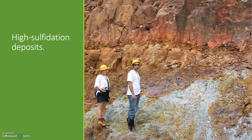High sulfidation epithermal deposits form proximal to the underlying igneous intrusions, primarily from acidic magmatic fluids with little contribution from meteoric fluids. Acidic fluids dissolve the country rock, leaving behind vuggy silica deposits with disseminated mineralization. Veins are not common in high sulfidation epithermal deposits. This photo was taken at Nansatsu in Japan, the type locality for high sulfidation epithermal gold deposits.